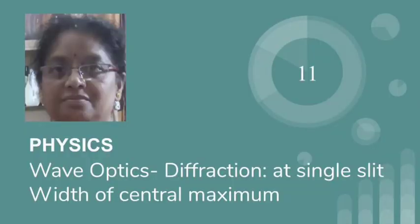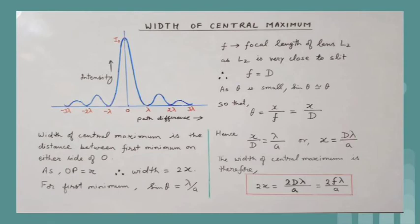The intensity of maxima is successively reduced as the distance from the centre increases. The diffraction pattern due to a single slit, as shown in the diagram, contains a central maximum with intensity I₀, on both sides of which we obtain a dark band or minimum followed by the first secondary maximum with intensity about I₀ by 22.